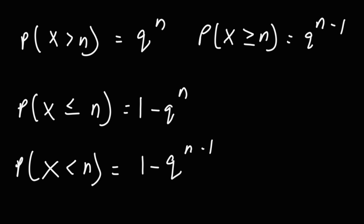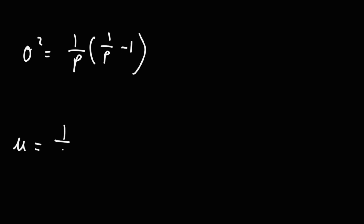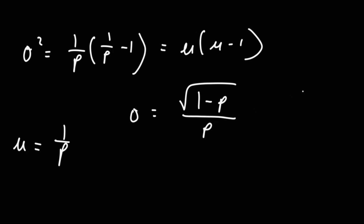By the way, you can find all of these formulas in the formula sheet below this video in the description section — that formula sheet is going to have a ton of formulas associated with probability. The variance is equal to 1 over P times (1 over P minus 1). The mean is 1 over P. The variance can also be written as the mean times the mean minus 1. The standard deviation is the square root of the variance, which simplifies to the square root of (1 minus P) over P, and keep in mind Q is 1 minus P.